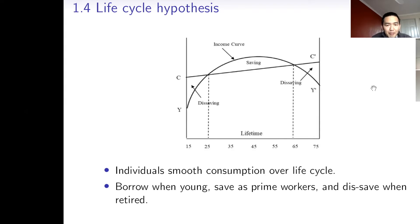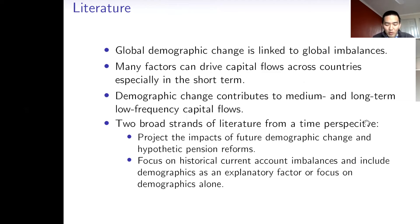The second theory is about why demographic change can drive capital flows. The life cycle hypothesis indicates that people tend to smooth their consumption over time, but they often have a hump-shaped income profile over the life cycle. This implies that people tend to borrow when they are young, save when they are prime-age workers, and dissave when they are retired. This borrowing and saving behavior is exactly the potential driver of capital flows. This paper aims to provide a review of demographic effects on international capital flows, focusing on medium and long-term low-frequency capital flows, because demographic change is a long-term low-frequency process.